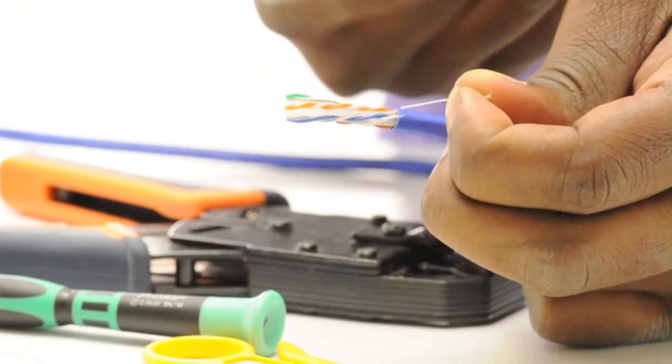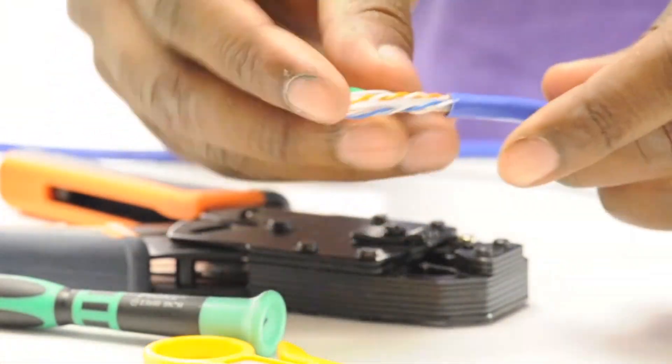Finally, a rip cord adds stability during installation and allows you to slice the outer jacket when preparing to terminate.